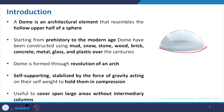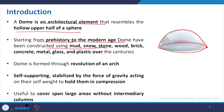Here you can see a crystal dome. A dome is an architectural element that resembles the hollow upper half of a sphere. Starting from prehistory to the modern age, domes have been constructed using mud — we cannot ignore the igloo, which is basically a dome structure — then wood, brick, concrete, metal, glass, and plastic. If you cut a cricket ball or plastic ball, that would be a solid dome.